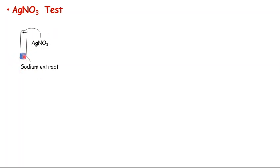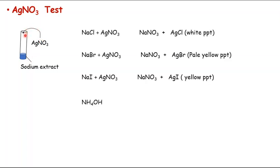The silver nitrate test: we take a test tube containing the sodium extract that we have prepared, and to this sodium extract we add silver nitrate. This is the first test for the detection of halogens — we add silver nitrate to the Lassaigne's extract.